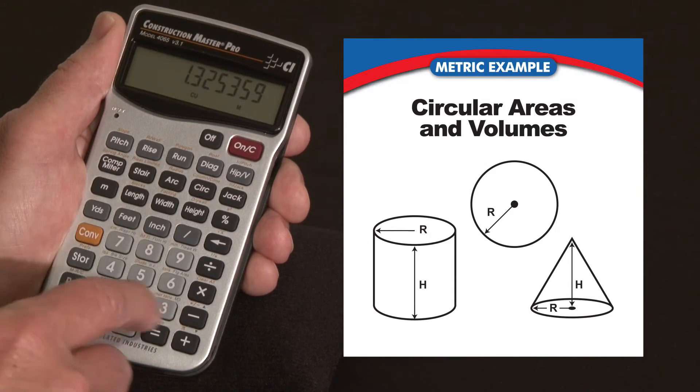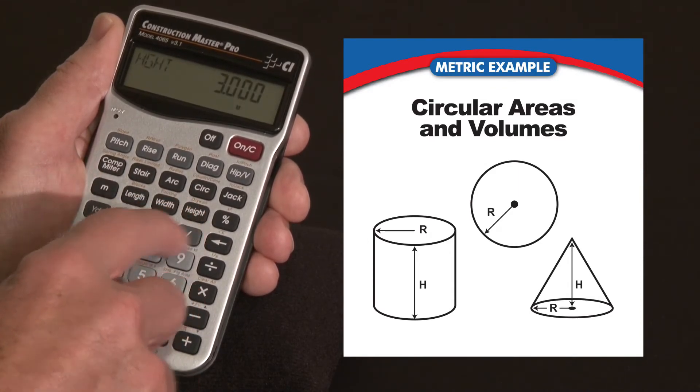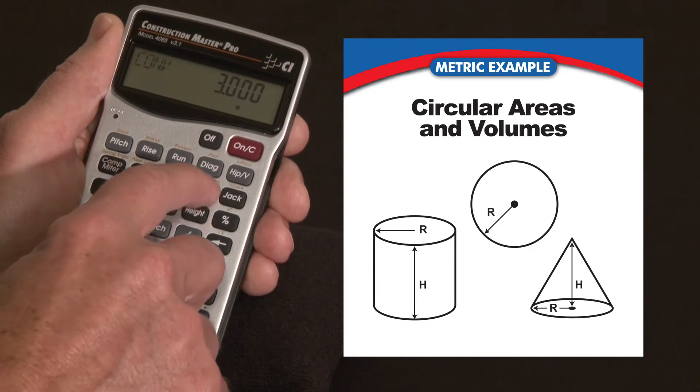If I have a set height, let's put in 3 meters as my height in the height key here. Now I want to hit convert circle, it says column and cone.